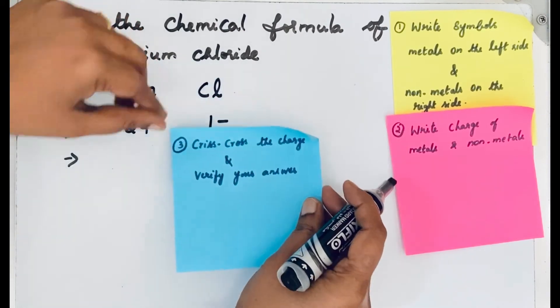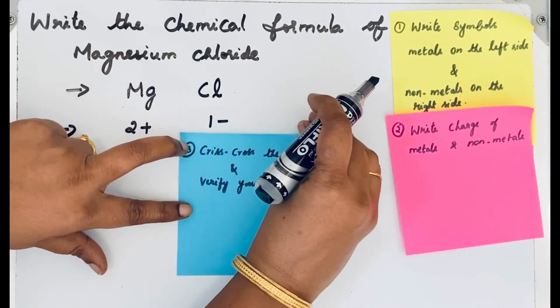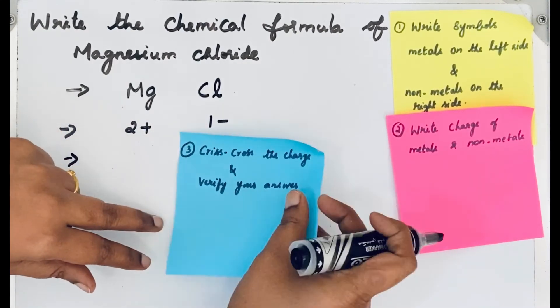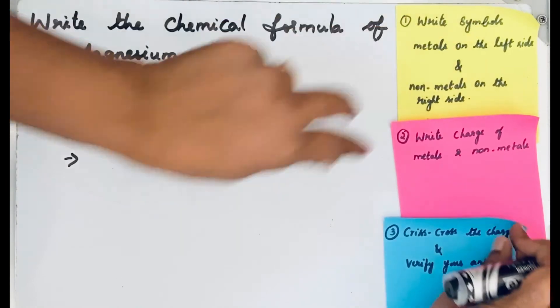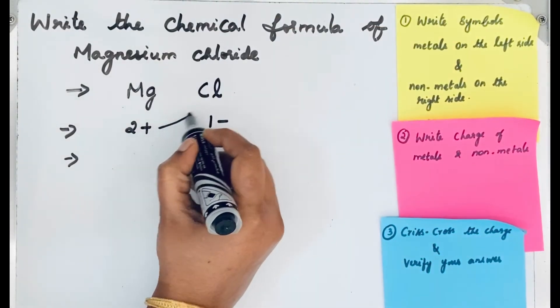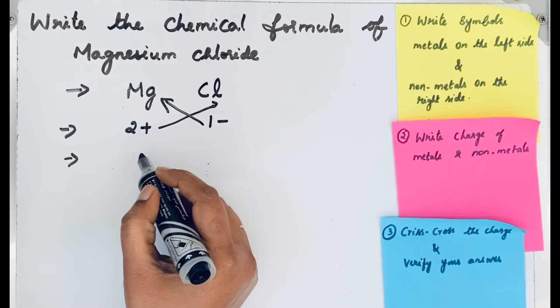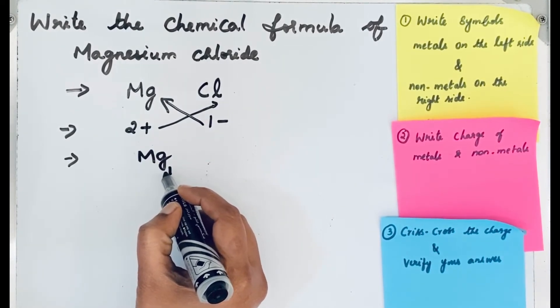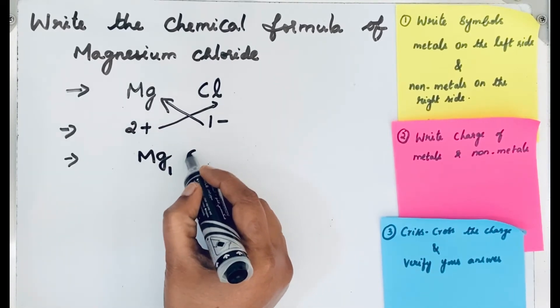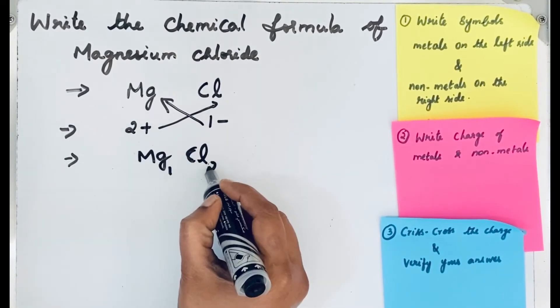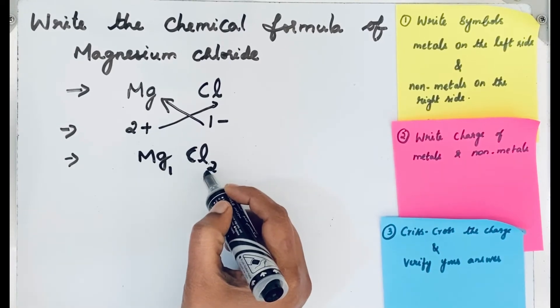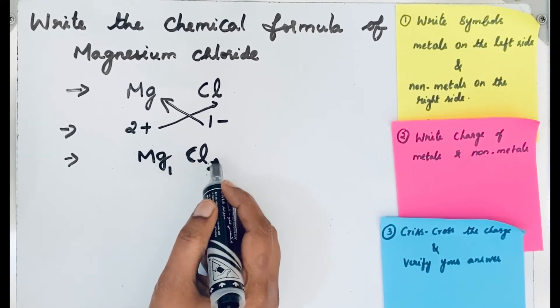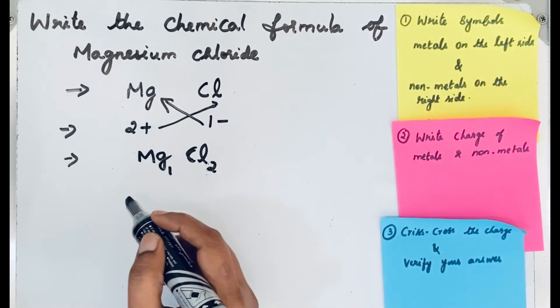We are going to crisscross the charge. Let's do the crisscross. When we are crossing the charge, then 1 will come as a subscript, then 2 comes down for chloride ions. We are not mentioning the charges here.